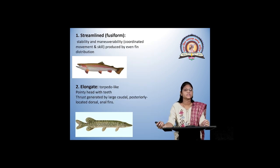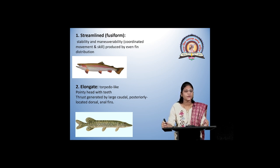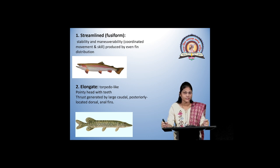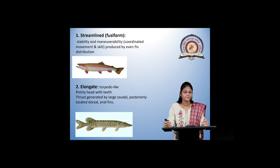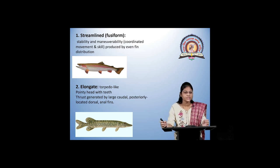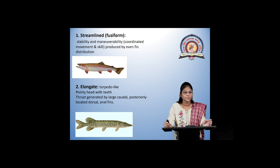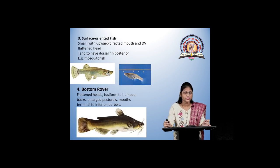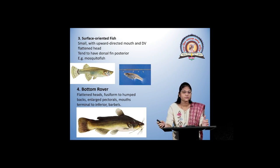Let us discuss one by one. The first is streamline or fusiform. This shape is made for stability and maneuverability — that is, coordination in movement and skill development. Next is the elongate or torpedo-like fish, which is somewhat cylindrical with a snout-like mouth. Next is the surface-oriented fish, in which the mouth is oriented in an upward direction, as seen in the figure. It is seen in the mosquito fish.